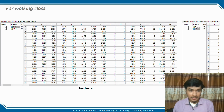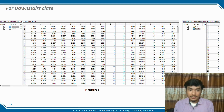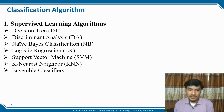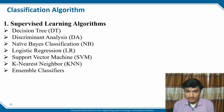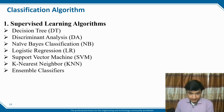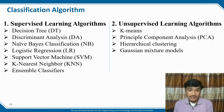The classification algorithm uses supervised learning algorithms, which include: Decision Tree (DT), Discriminant Analysis (DA), Naive Bayes classification (NB), Logistic Regression, Support Vector Machine (SVM), K-Nearest Neighbor (KNN), and ensemble classifiers. Unsupervised learning algorithms include K-means, Principal Component Analysis (PCA), hierarchical clustering, and Gaussian mixture model. Since unsupervised learning is more complex and mainly involves complex mathematical terms, in our case we use supervised learning algorithms.